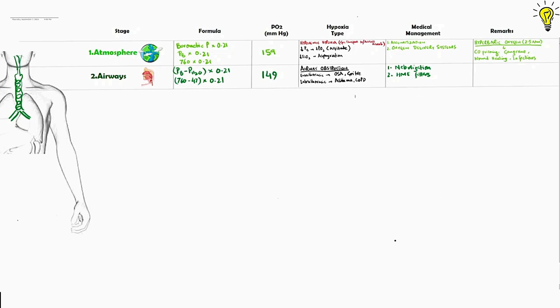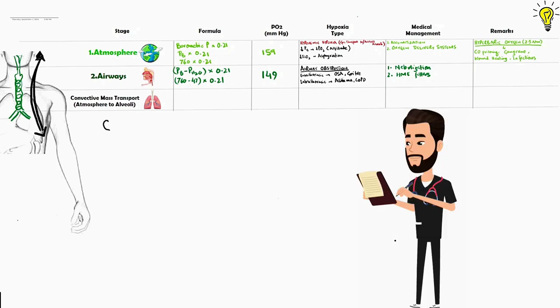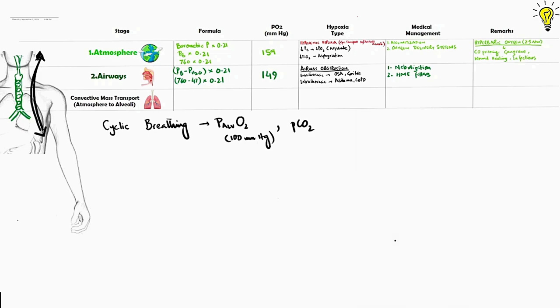Before moving to the third stage of cascade, it is essential to talk of convective mass transport system of the lungs. This cyclic breathing of inspiration and expiration over an average time helps constantly maintain alveolar oxygen pressures of around 100 mmHg, integrated with CO2 levels. We know that minute ventilation is respiratory rate into tidal volume. The sensors dictating this breathing cycle pattern are central ones in medulla and peripheral chemoreceptors located in aortic and carotid bodies.